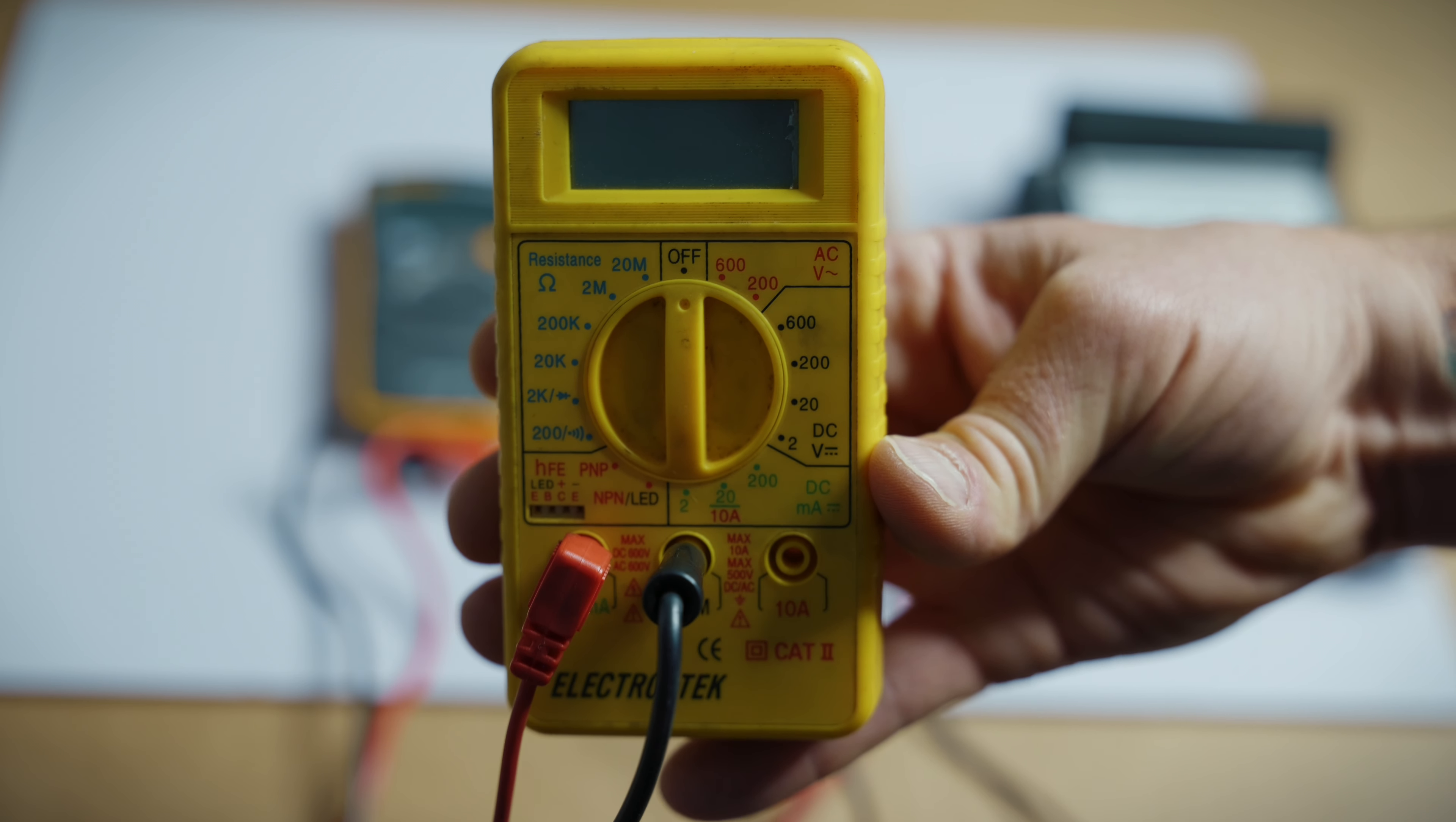This is an analog meter. Instead of having a digital readout, you have to set your range manually here and then read the analog scale here, depending on which scale you're using over here.